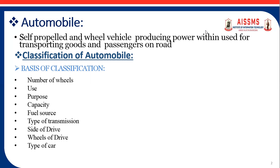Depending on the type of fuel source, some vehicles run on petrol, some on diesel, and some on gas. Nowadays, some are electric vehicles and hybrid vehicles. Depending on the fuel used, they are classified as petrol, diesel, gas, and electric vehicles.